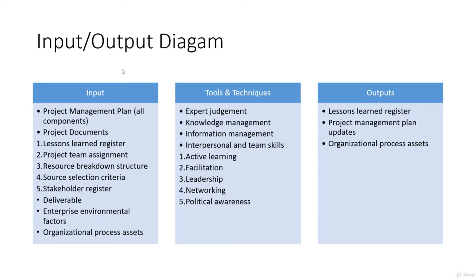Looking at the input-output diagram, as far as inputs are concerned, we have the project management plan — all components, anything and everything — because you are looking at documents and information. All project management plan components and documents, the lessons learned register maintained for all projects, project team assignments, resource breakdown structures, source selection criteria, stakeholder register, deliverables, enterprise environmental factors, and organizational process assets all serve as inputs.